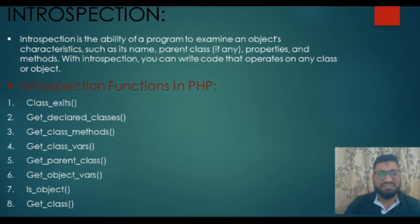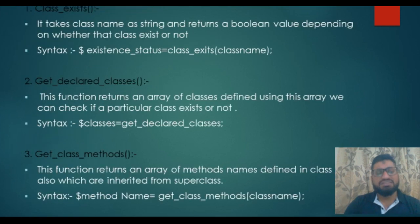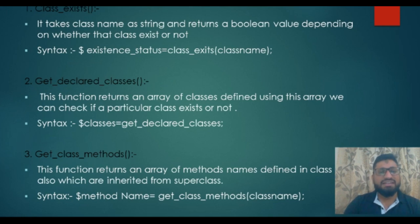Introspection functions in PHP include: class_exists, get_declared_classes, get_class_methods, get_class_vars, get_parent_class, get_object_vars, is_object, and get_class. These are the functions that come under introspection, and each function has its own specific functionality.